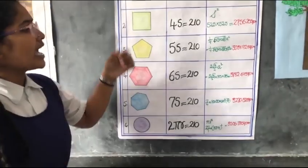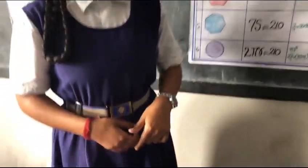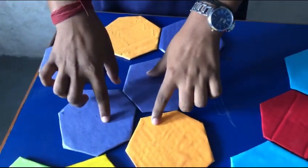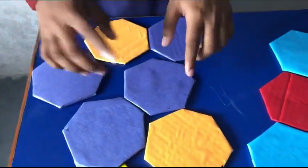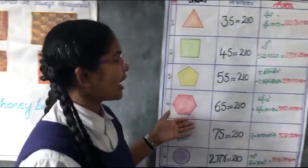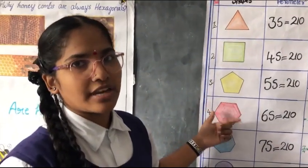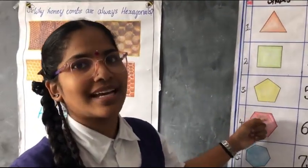We have also seen that hexagon is the polygon that tessellates, and all the polygons that have more than six sides do not tessellate. So, we can conclude that hexagon is a polygon that covers larger area with the fixed perimeter and tessellates.